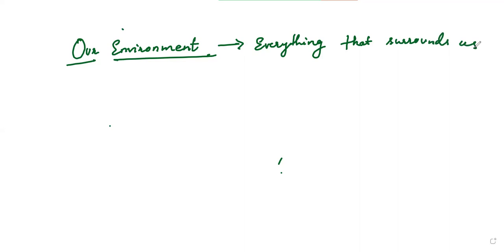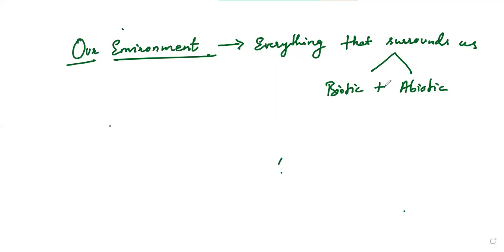What are the things which surround us? There are two types. The first one is biotic and the second one is abiotic. Biotic means living factors, whereas abiotic means non-living factors. When both interact together, what is formed is called an ecosystem.